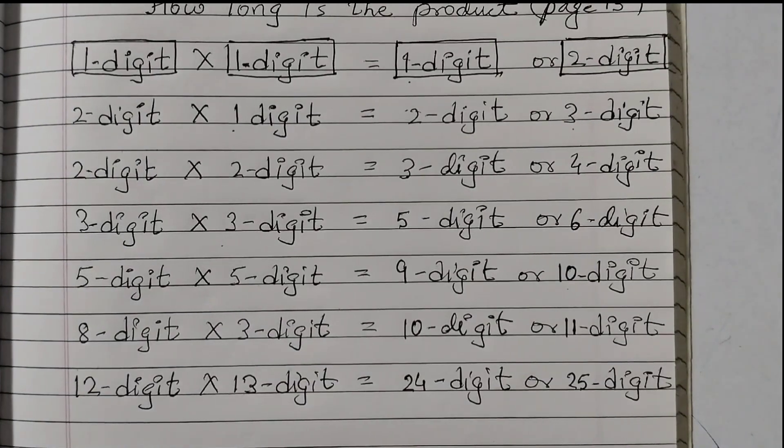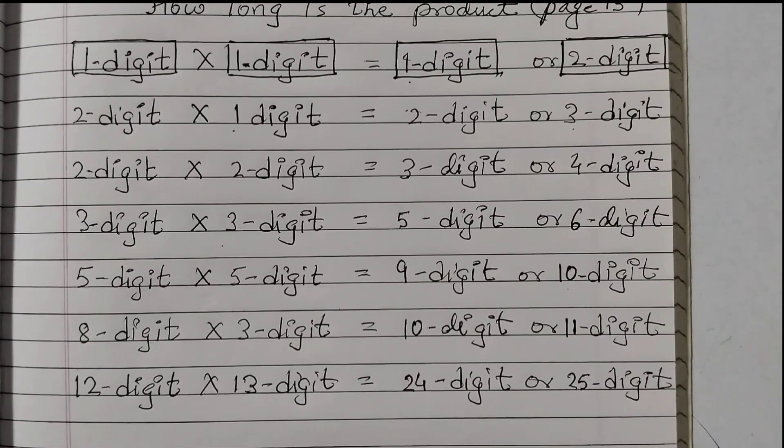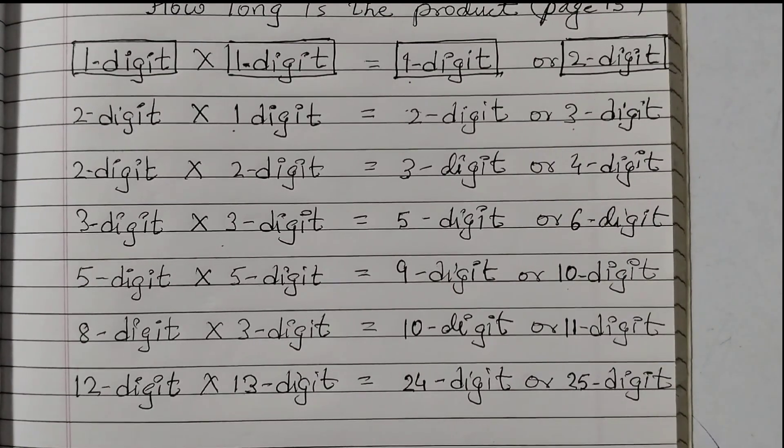So using this pattern, we can easily find out that when we are multiplying 2 numbers, how many digits we are going to have in the product. Hope you find this pattern interesting. Thank you.